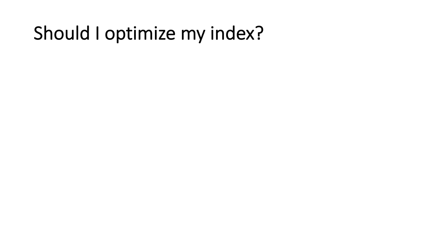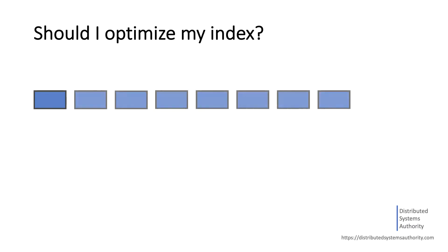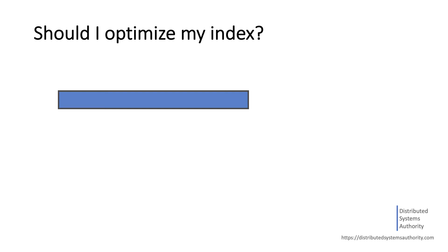One of the most common questions on Solr is whether to optimize the index. This is understandable — who doesn't want an optimized index? Optimize is an operation that forces Lucene to merge existing segments into a specific number of larger segments, with the default being 1. For instance, an index with 8 segments will have only one large segment after optimizing.